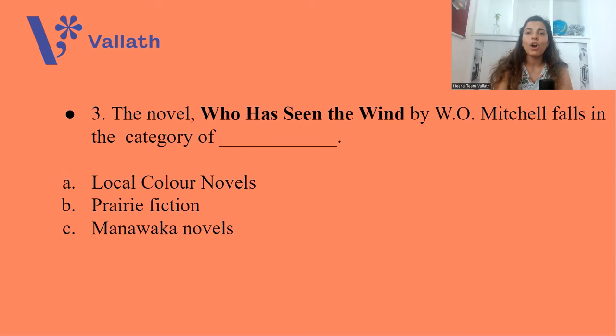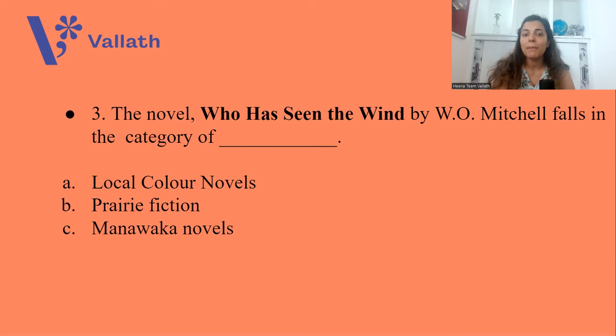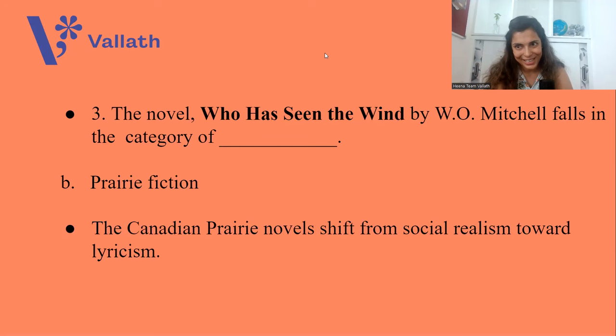Question three: The novel Who Has Seen the Wind by W.O. Mitchell falls in the category of A. Local Colour Novels, B. Prairie Fiction, or C. Manawaka Novels. Who Has Seen the Wind by Mitchell belongs to option B, Prairie Fiction. The Canadian Prairie Novel shifts from social realism towards lyricism.